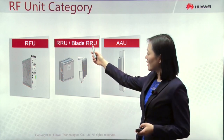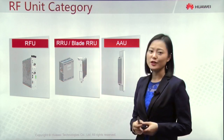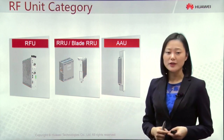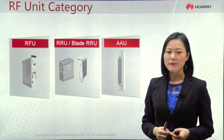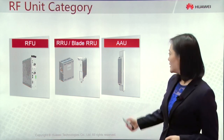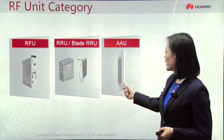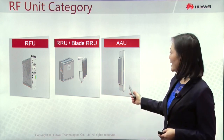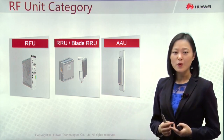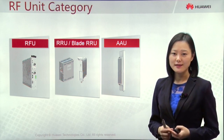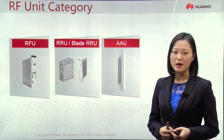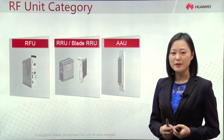The Blade RRU is a new type of traditional RRU. It's smaller and lighter, and supports seamless assembly, so we can save on-tower space. The third type of RF unit is AAU. This AAU integrates the function of the antenna system together with our RF unit, saving 0.8 dB jumper loss and presenting better performance.